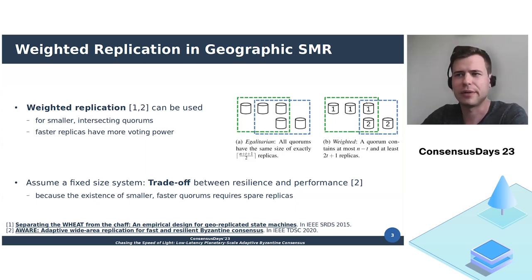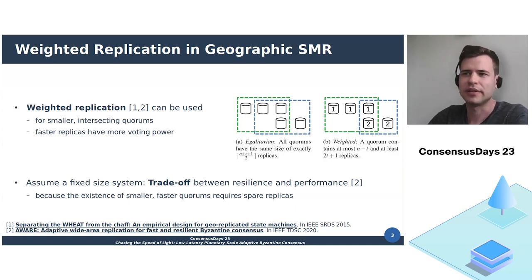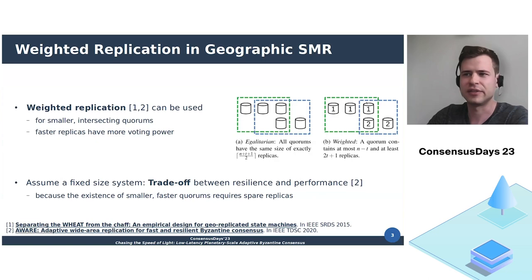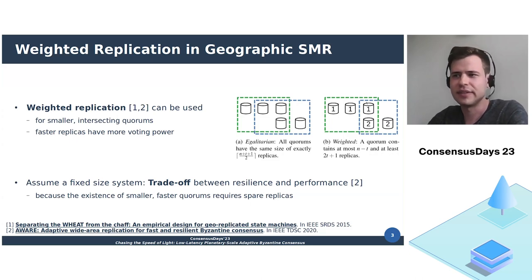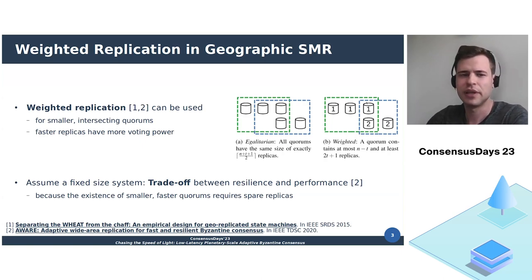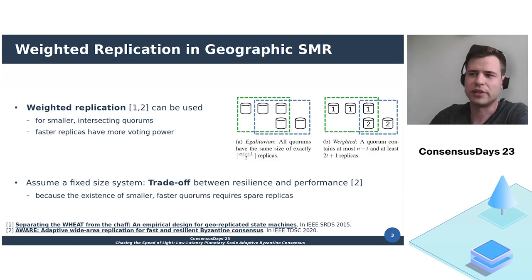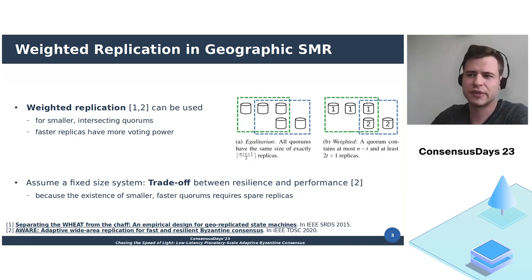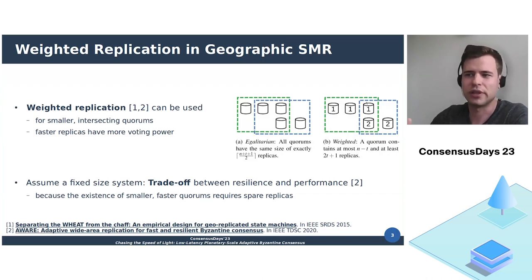Previous works like Weed and Aware use weighted replication to assign high voting weight to the faster replicas in a system, thus accelerating consensus decisions. Now assume that you have a fixed-size system and you use weighted replication. This would require the existence of some additional spare replicas, so some extra redundancy needs to be provided to the system, and it does result in a trade-off situation. We need to choose if we want to use the redundancy for increasing the performance of the system or if we want to increase the resilience of the system.